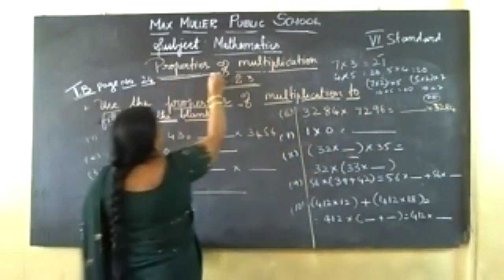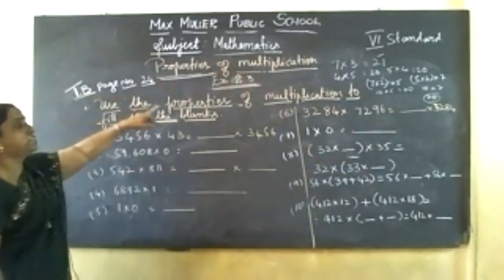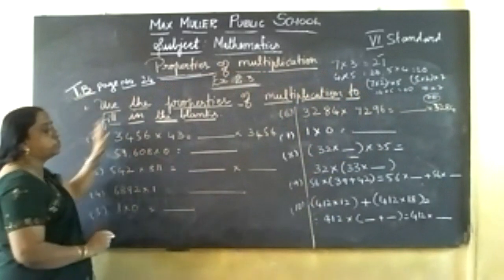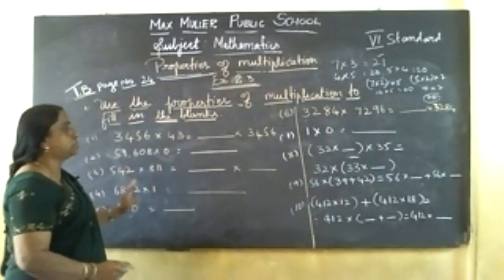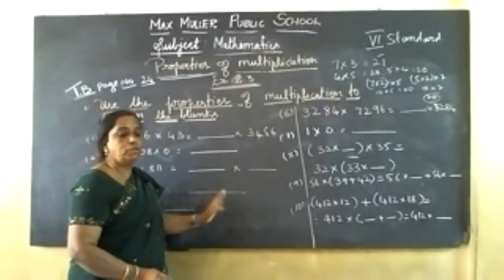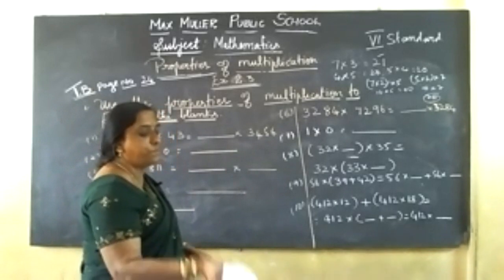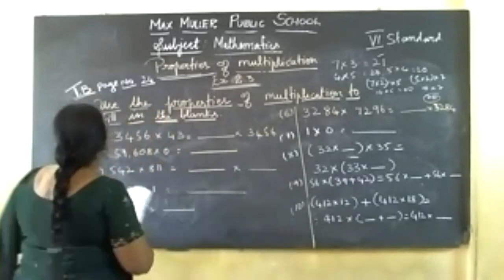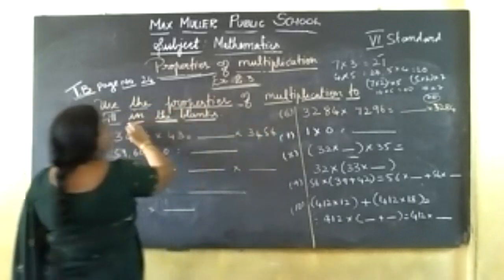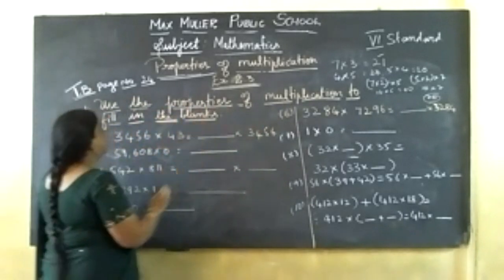Today we will solve sums based on multiplication properties only. This is exercise 2.3. First, you copy in your textbook. If you have a textbook, better you copy answers in the textbook. If you don't have a textbook, copy all in rough note, then complete in textbook when you get it. Now question number 1: use the properties of multiplication to fill in the blanks.